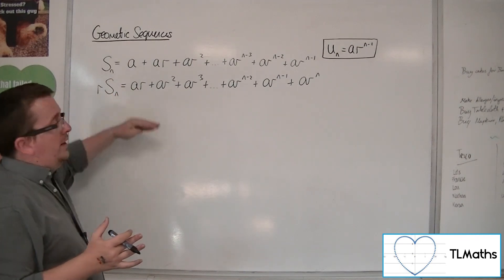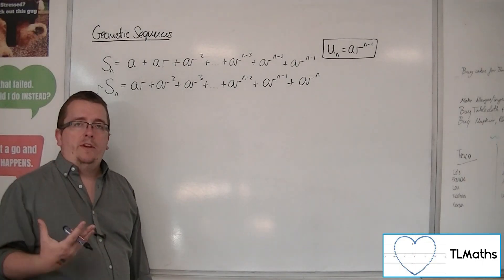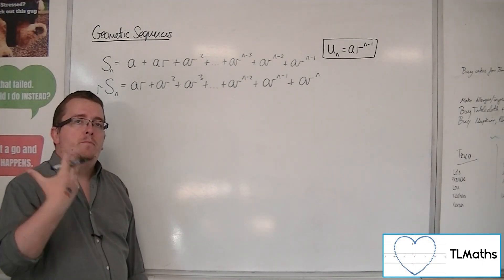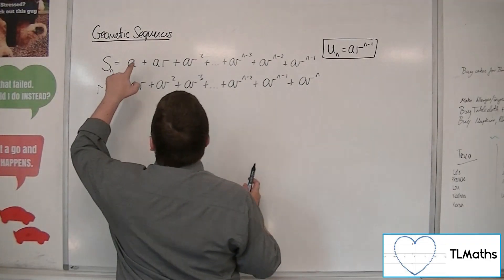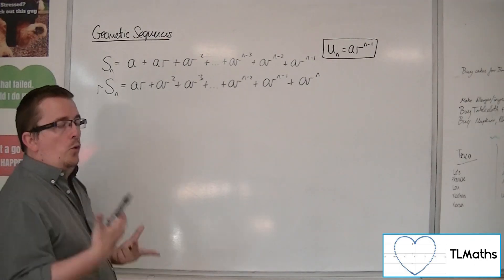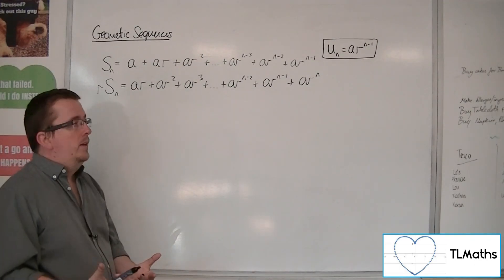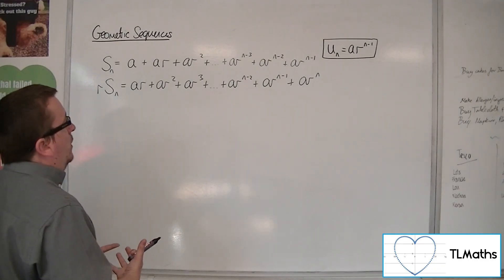Both of these lines include a great many repetitions, ones that are in both lists. The only ones that aren't in both lists are a and ar to the n. So if I subtracted one from the other, then I would cancel out a whole host of terms.